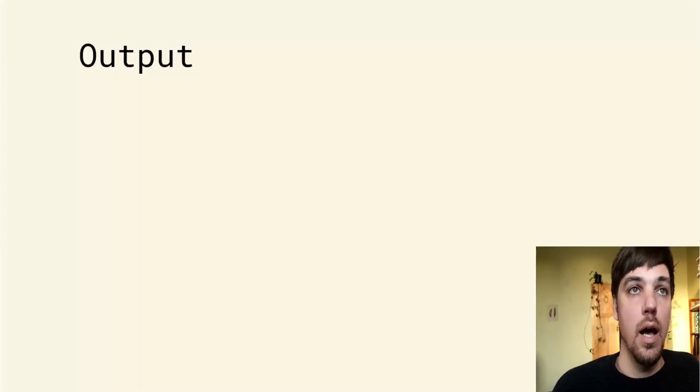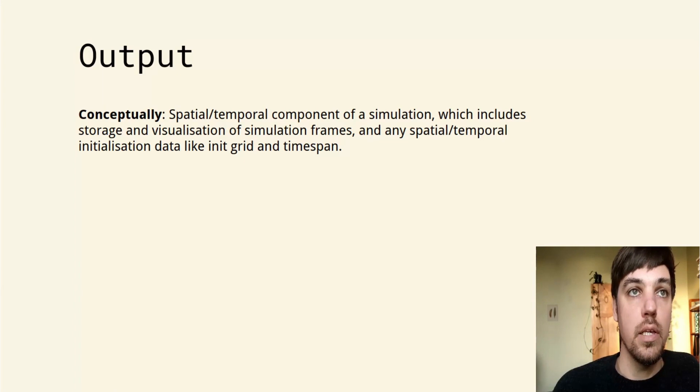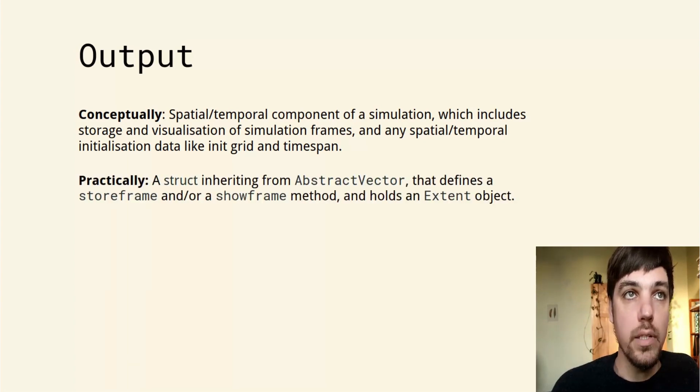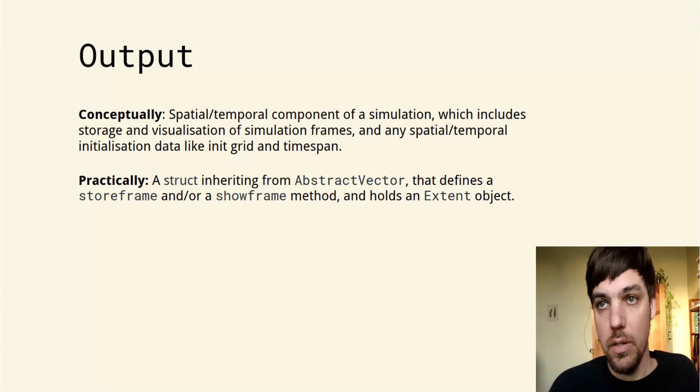Now we've looked at rules, we'll have a look at outputs. An output is basically a spatial and temporal component of the simulation. It includes storage and visualization of simulation frames and any spatial and temporal initialization data, like the init grid and time span, and maybe some auxiliary data that goes with the simulation.